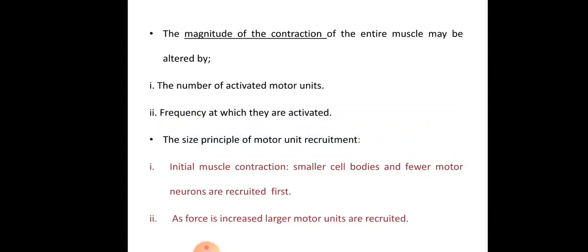The magnitude of contraction of any muscle is altered by two main things: first, changing the number of motor units activated — fewer activated units means less force, more activated units means more force. Second, the frequency at which they are activated — if all are activated repeatedly with no gap, there is no fatigue, but a larger gap between activations leads to fatigue. The number and structure of motor units varies from muscle to muscle.